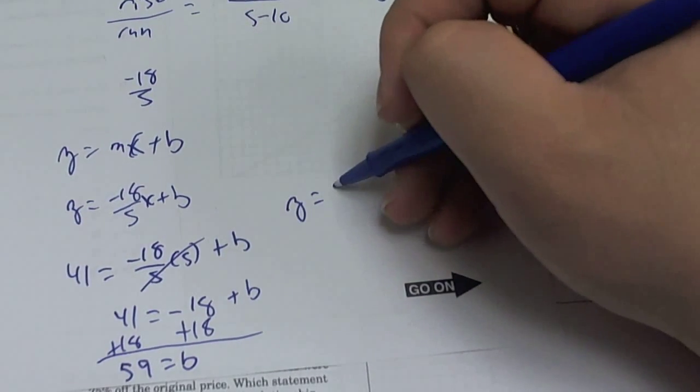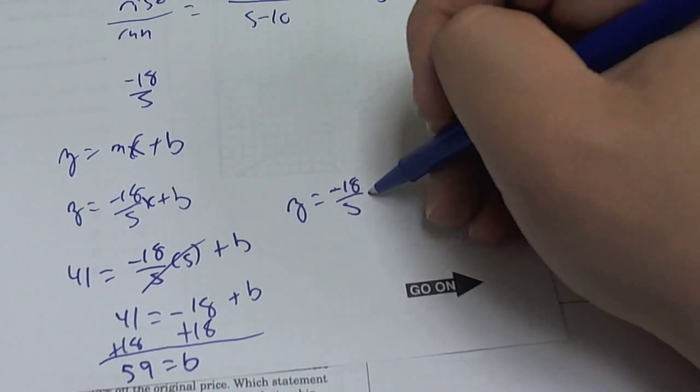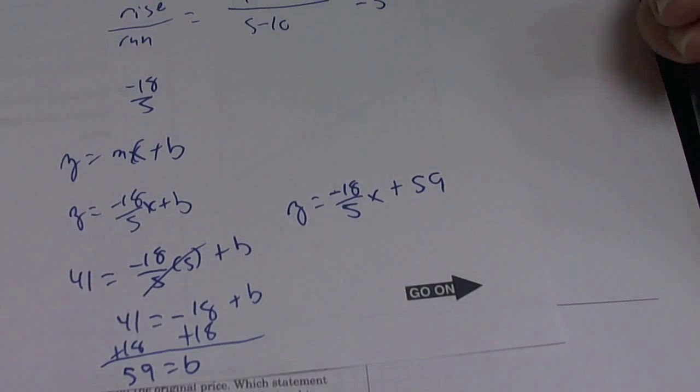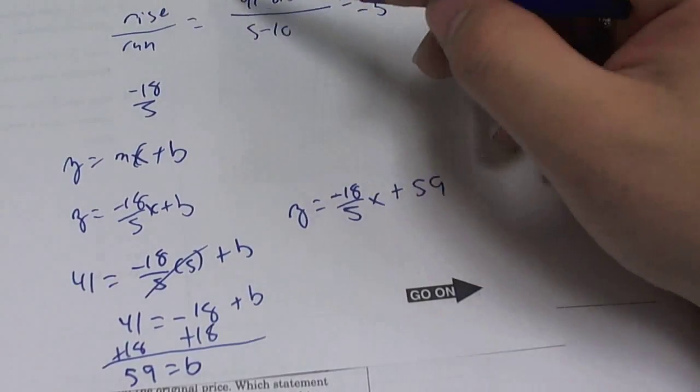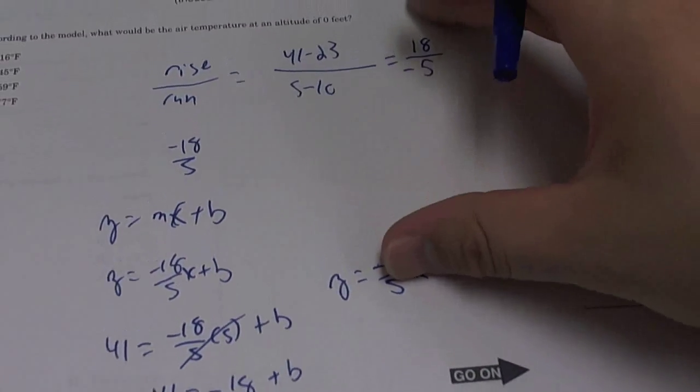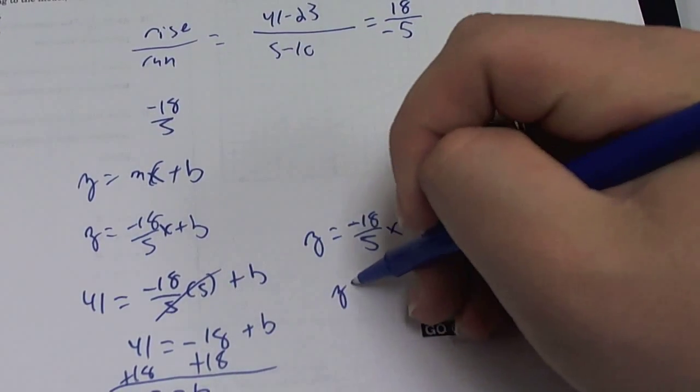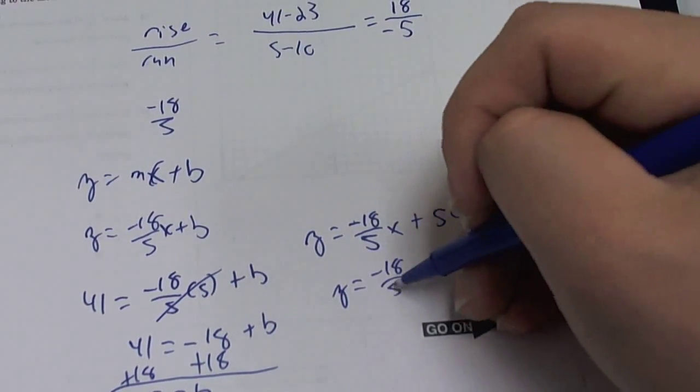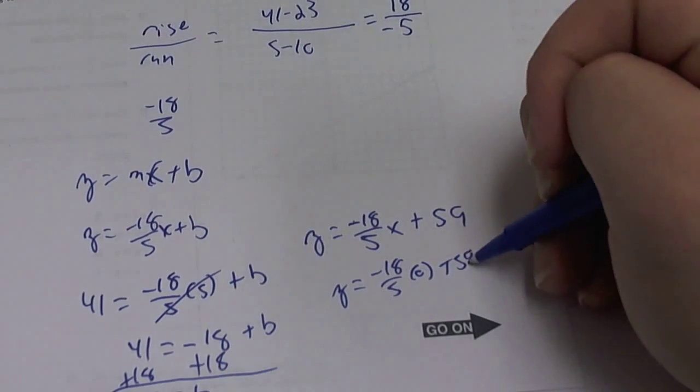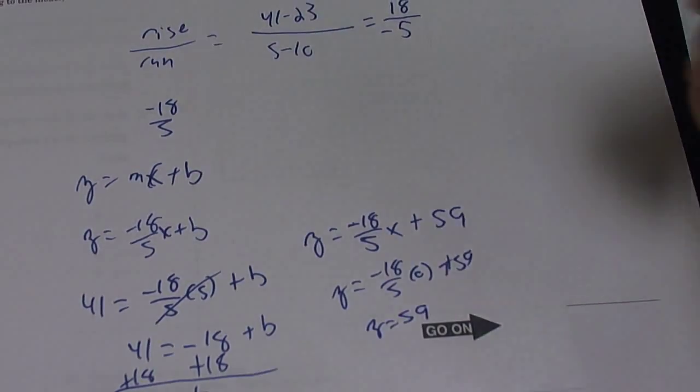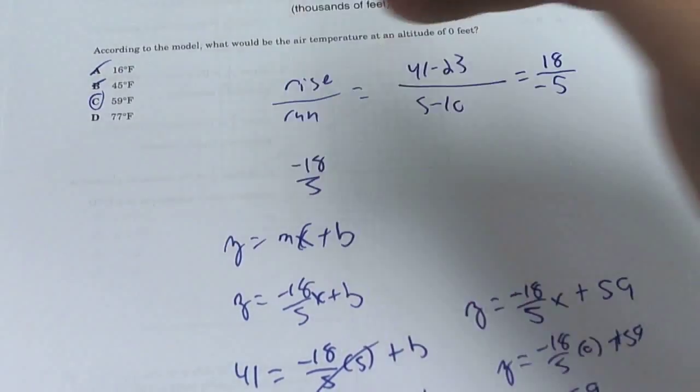So our final equation is y equals negative 18 over 5 x plus 59. It says what would be the air temperature at altitude 0. So zero is our x. You plug in 0, so y is equal to negative 18 over 5 times 0 plus 59. So y is equal to 59. The answer is C, 59.